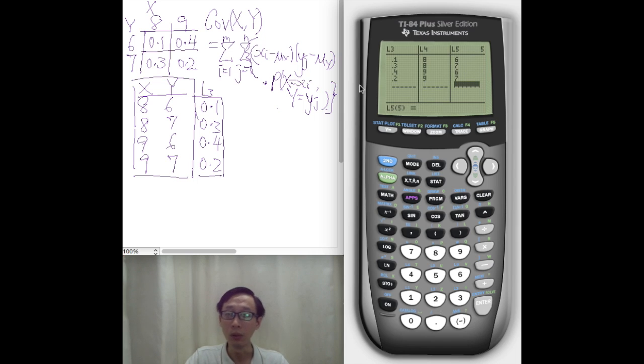Okay? So, important thing is that they must correspond. That is, when X is 8 and Y is 6, the probability is 0.1 because this is exactly what is given to us in the question. So, now that we have entered this,